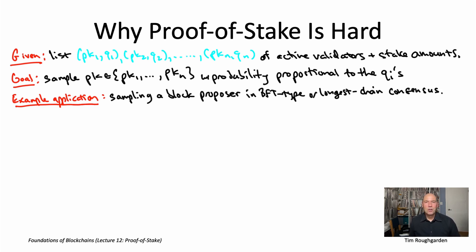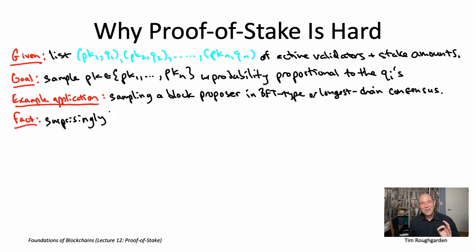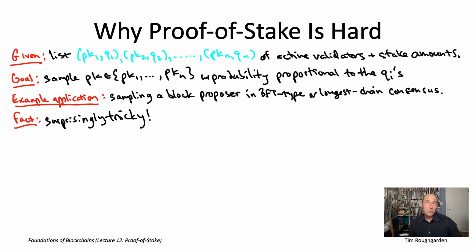Looking at this, you might think: how hard could it be? There's just some explicitly defined distribution that the protocol is well aware of, and all it has to do is randomly pick a sample from that distribution. Well, it is actually surprisingly tricky to do this in the context of a blockchain protocol. Indeed, every proof-of-stake blockchain protocol handles and implements this a bit differently.